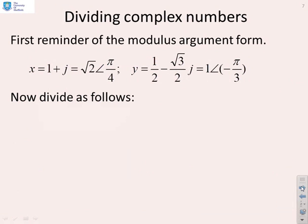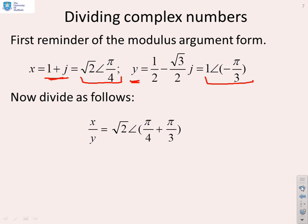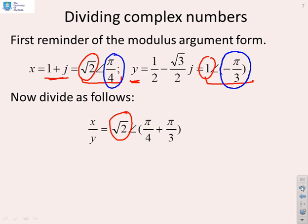Now let's apply these with some examples. First, a simple example. Complex number x is written in Cartesian form, but in modulus-argument form it's √2 at angle π/4. Similarly y has modulus 1 and argument −π/3. To divide x by y: the modulus is √2 divided by 1, giving √2. For the phase of x/y, we take π/4 and subtract the phase of y, which is −π/3, so we end up with π/4 + π/3. Hopefully you'll agree that was very simple.